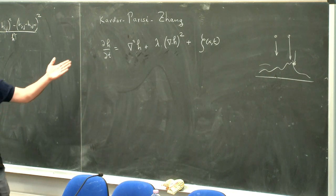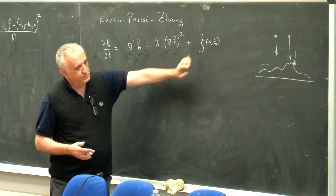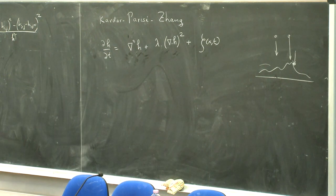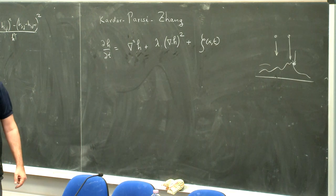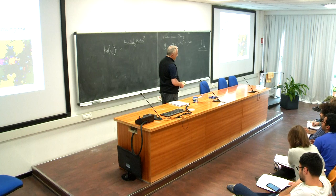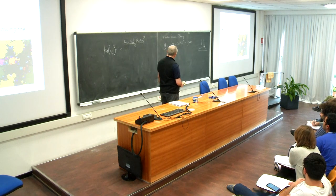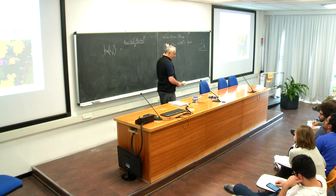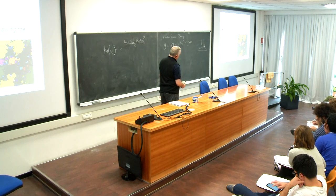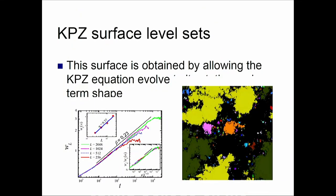You let this surface generate on the computer — with white noise — and then you take level sets, cutting like contours. The black areas have negative height. You take the boundaries of these level sets — a line here, for example — and ask if they are SLE. There is no conservation of volume because of the nonlinear term — you can see that dH/dt is always positive, whereas in Edwards-Wilkinson it is not.